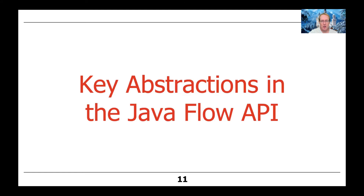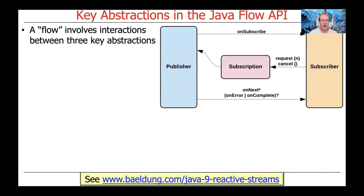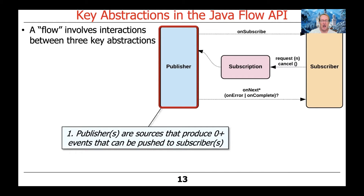So what are the key abstractions in this API? There are three of them: publisher, subscriber, and subscription. Publishers are data sources that produce zero or more events that can be pushed to subscribers. The key here is zero or more — there may be an infinite number, a fixed number, or none whatsoever.